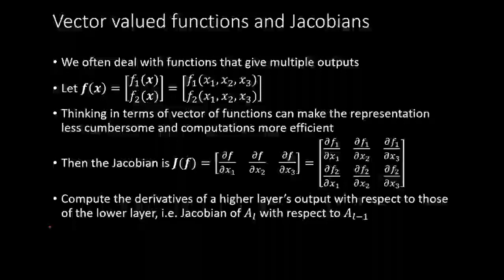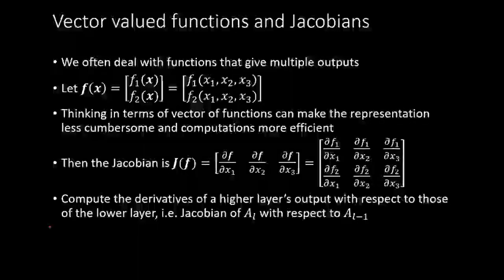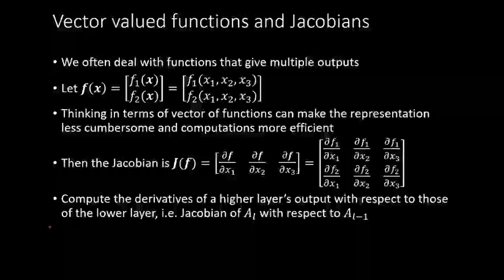The Jacobian is basically a generalization of a gradient. In a gradient, you had multiple inputs and a single output, and we were taking the partial derivative of that single output with respect to each of the multiple inputs. Now, if your outputs are also multiple, then we will have a matrix of partial derivatives — for each output with respect to each input.